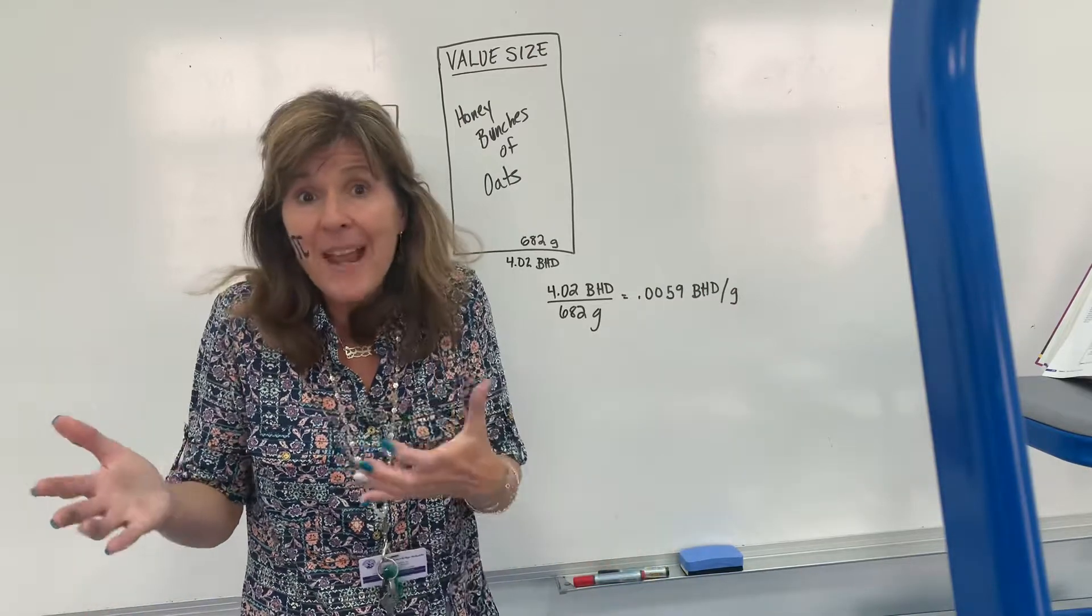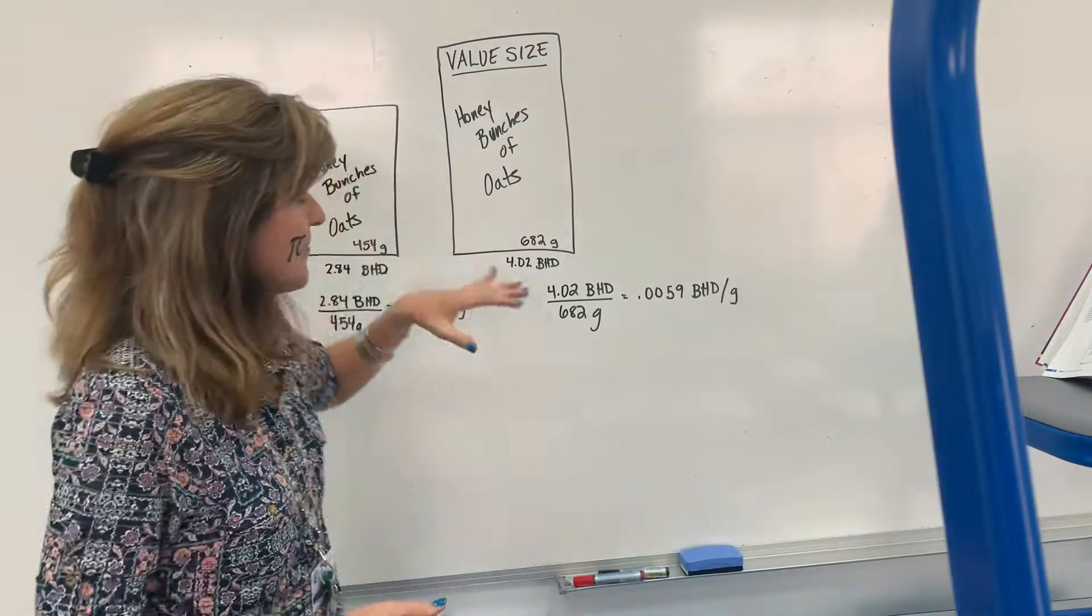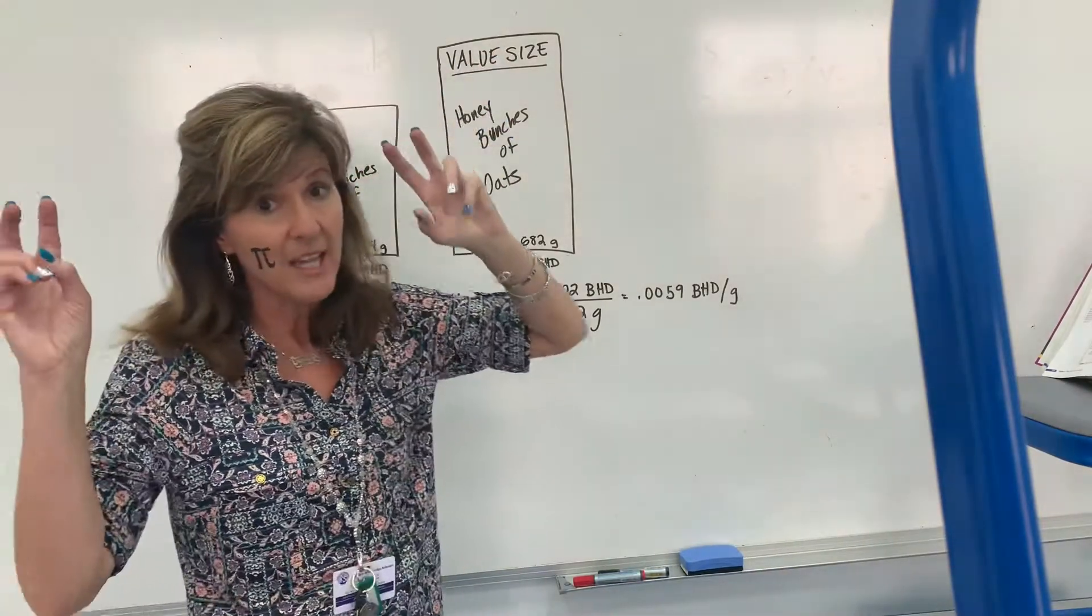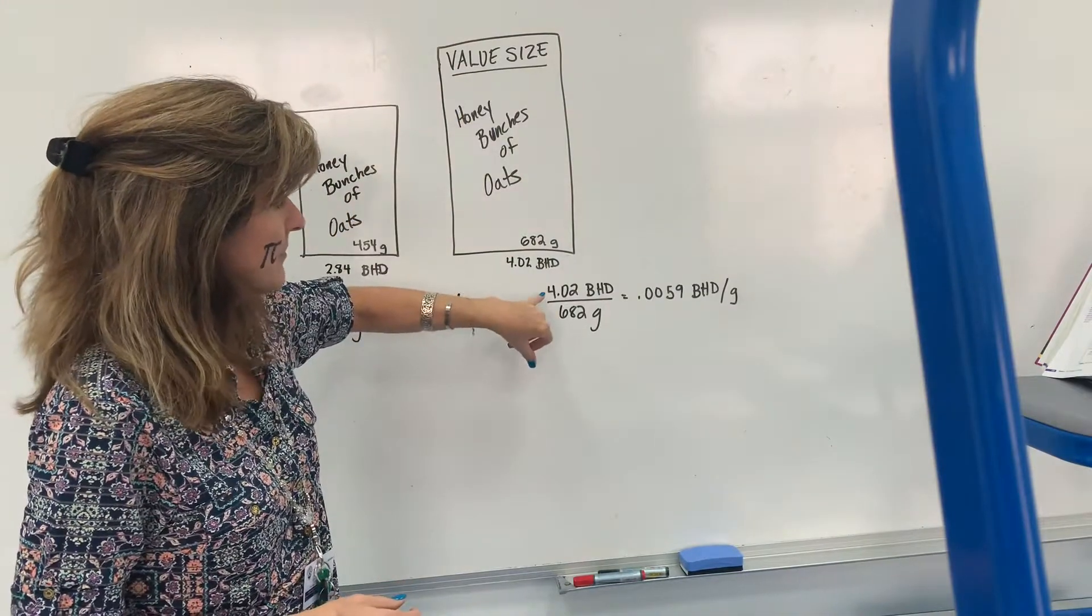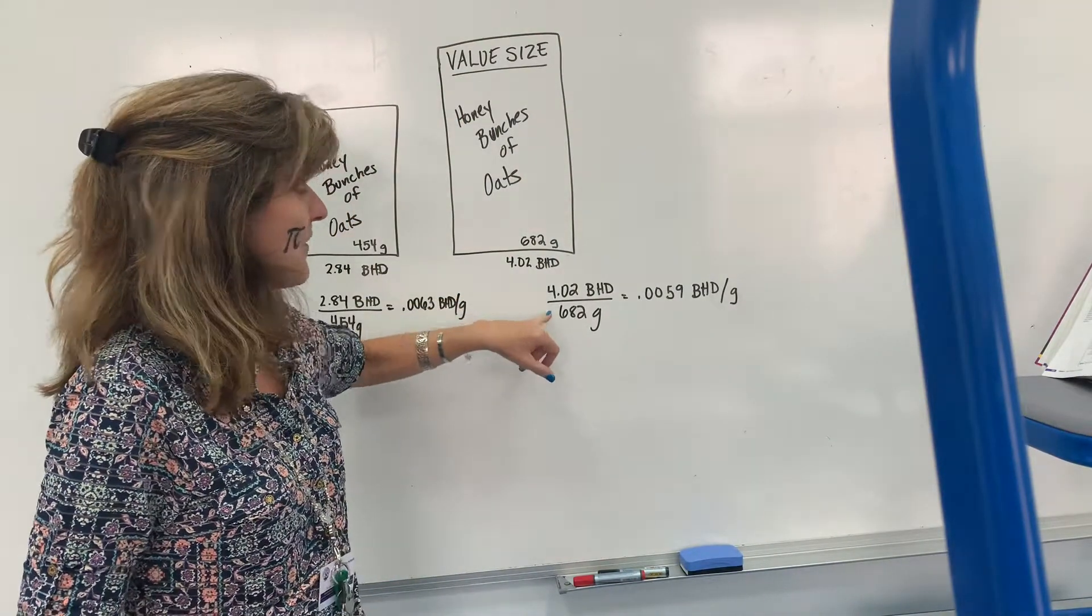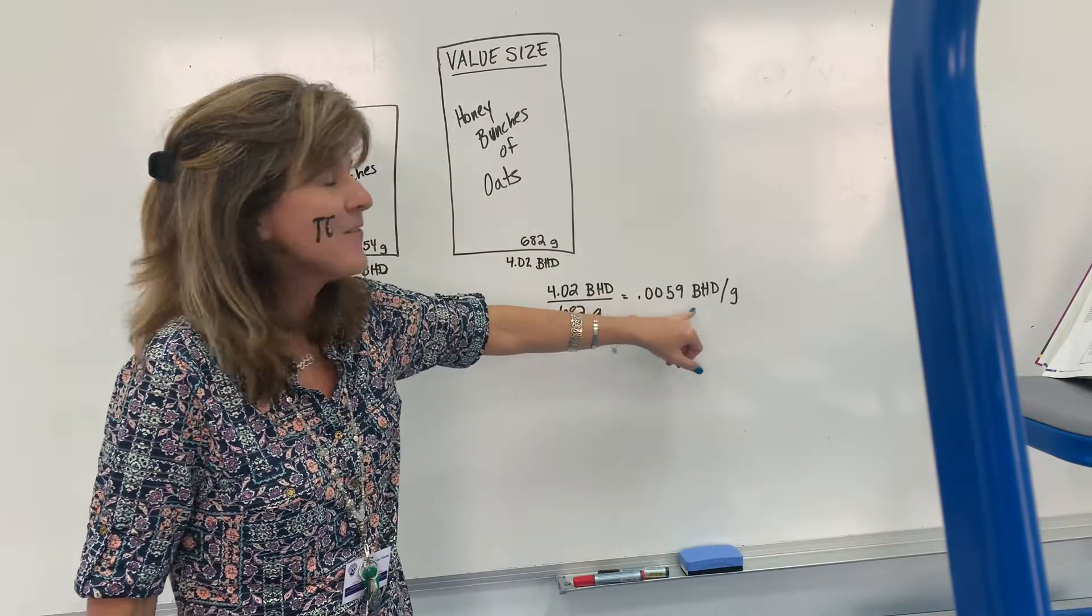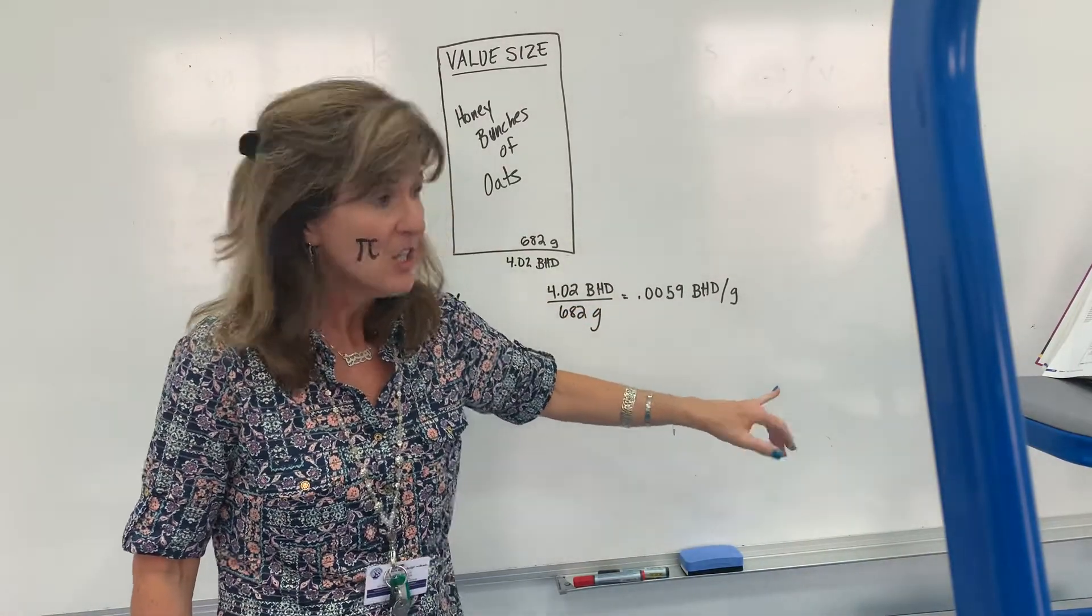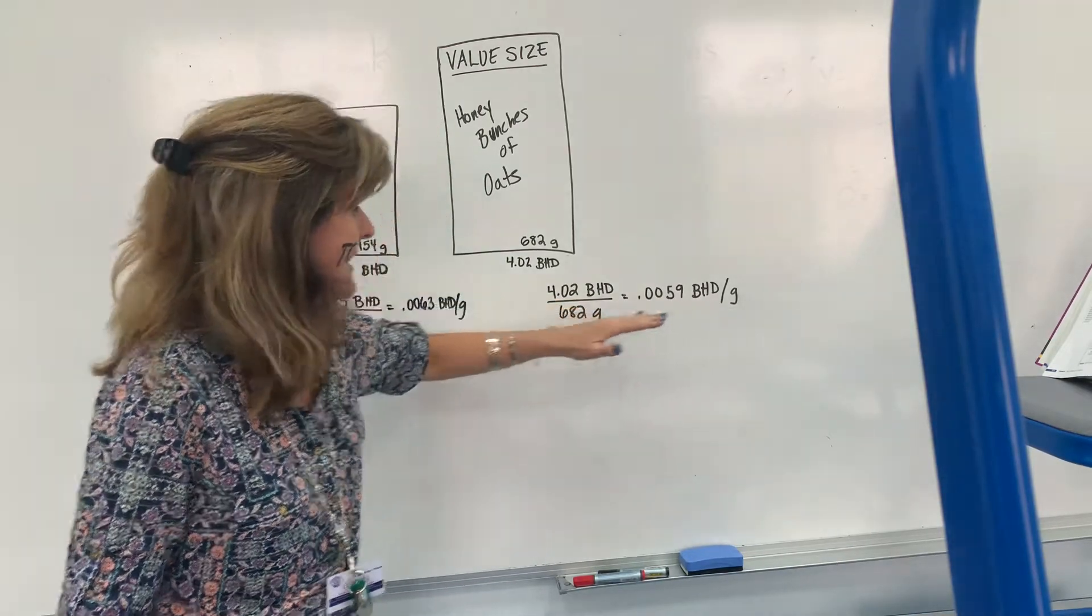So with the value size, which we weren't sure if it was value at this point, I did the division problem: 4.02 divided by 682, and I got 0.0059 BDs per gram.